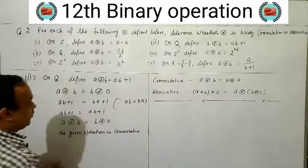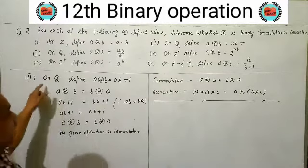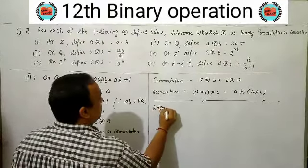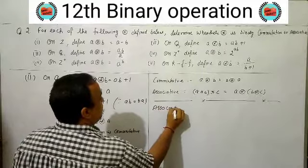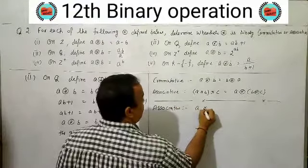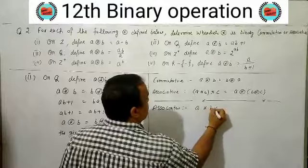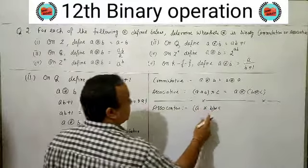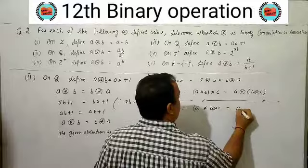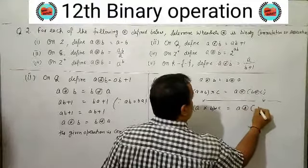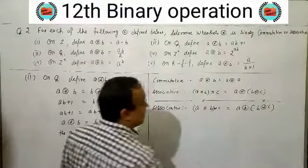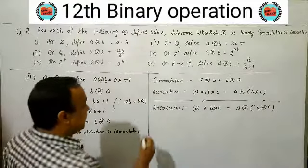So the given operation a★b = AB+1 is commutative. Now let's check associative.